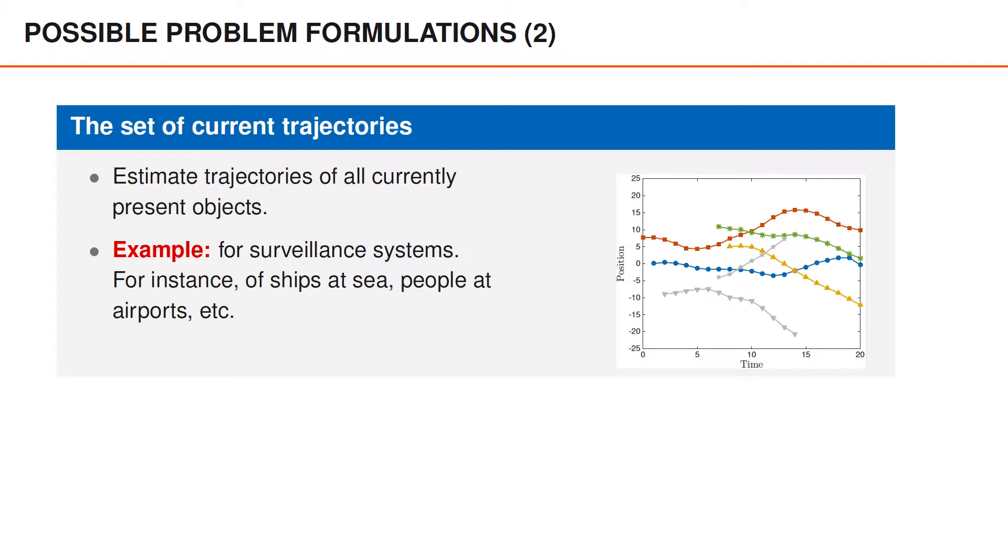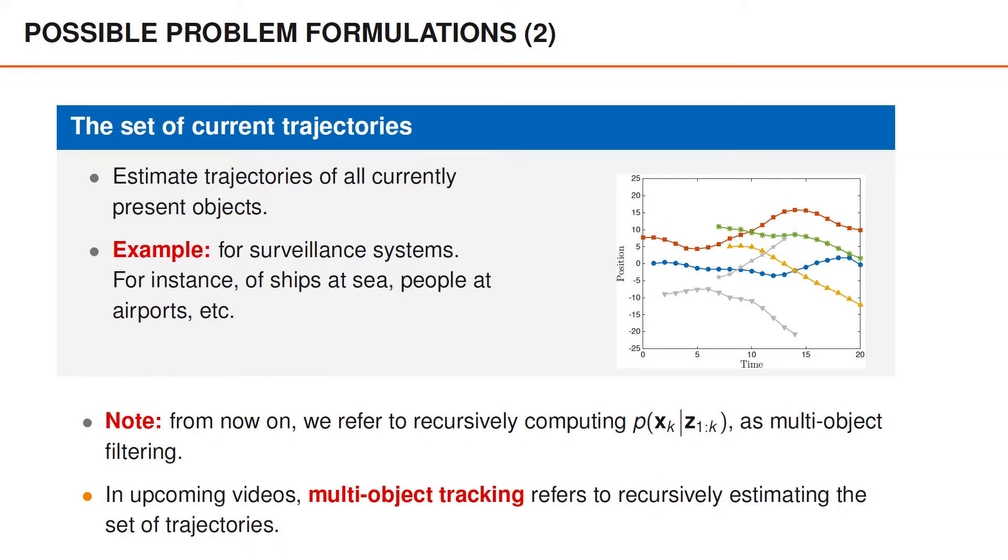We have previously referred to the task of computing the posterior distribution of the set of objects as target tracking. To be more precise, we actually view that as one of several possible subtasks in multi-object tracking. From now on, we will refer to that task as multi-object filtering to distinguish it from the new problem formulations. In upcoming videos, the term multi-object tracking instead refers to the specific problem of recursively estimating the trajectories of all objects or, more generally, computing the posterior distribution over these trajectories.